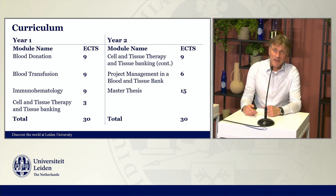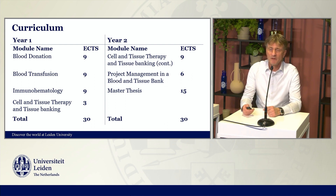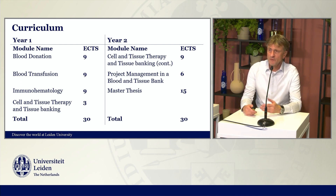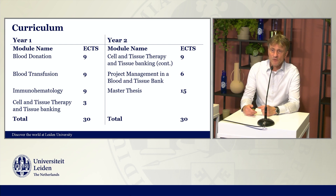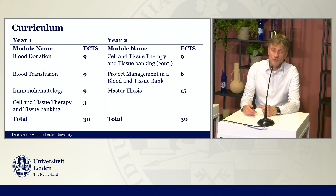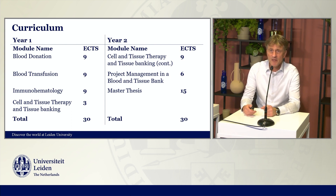Year two also includes a module on project management in the blood bank and tissue bank. Then there is the master thesis — a really important part that gives you the opportunity to specialize or personalize your own interest in these fields. It can be a subject currently relevant to your company or research group, or one that preludes to a further career wish. The master thesis is a great way to personalize your study. In total, 60 ECTS.